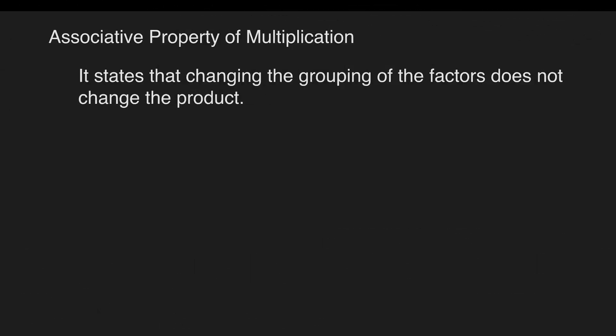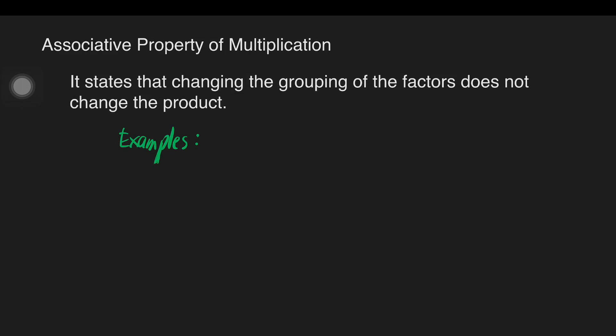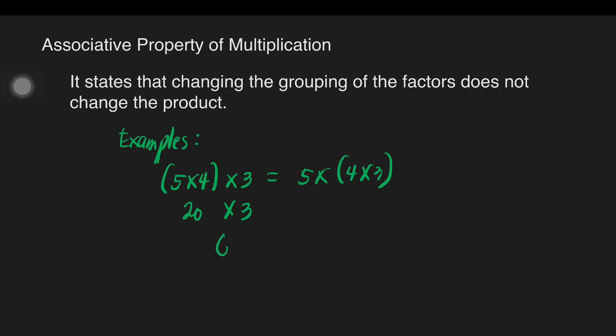Next is the associative property of multiplication. It states that changing the grouping of the factors does not change the product. For example, quantity 5 times 4, times 3 is equal to 5 times quantity 4 times 3. We'll do the groupings first. 5 times 4 is equal to 20, times 3. 20 times 3 is equal to 60.